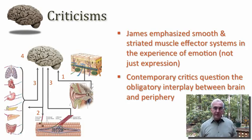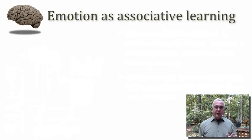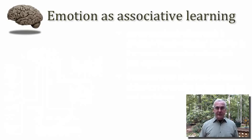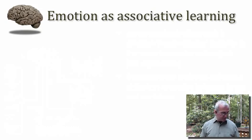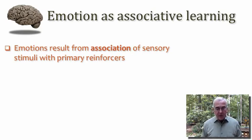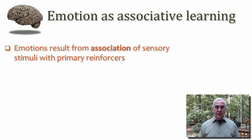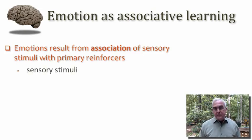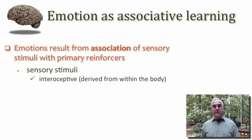I want to give you a neurobiological framework for approaching an understanding of emotion — a framework that will put us in a position to actually do experiments and test hypotheses that might begin to get at the neural mechanisms of emotion. This framework essentially proposes that we consider emotion as a form of associative learning. Emotions would result from the association of sensory stimuli with primary reinforcers. These sensory stimuli might be interoceptive — derived from within the body, pertaining to visceral sensory signals from our gut and other viscera.